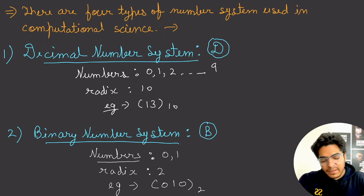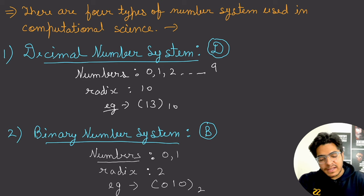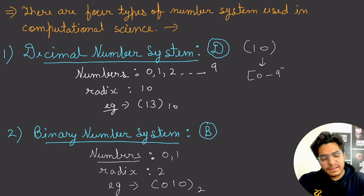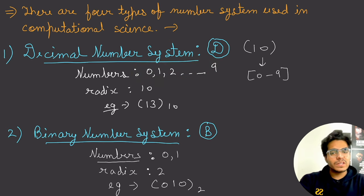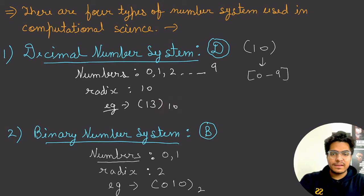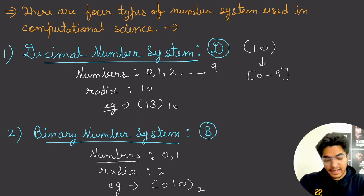The decimal number system has radix 10, so digits range from 0 to 9. These are the same numbers we use in daily life. No digit can be 10 or above — all digits must be less than the base, i.e., from 0 to n-1. For example, in the number 13 with base 10, both 1 and 3 are valid since they are less than 9.